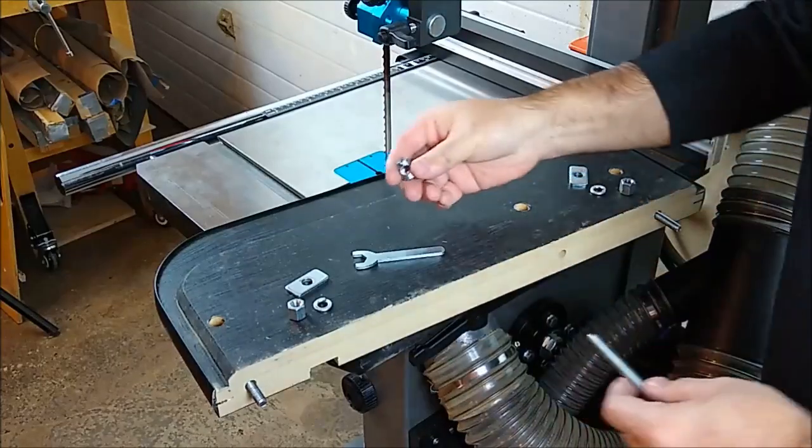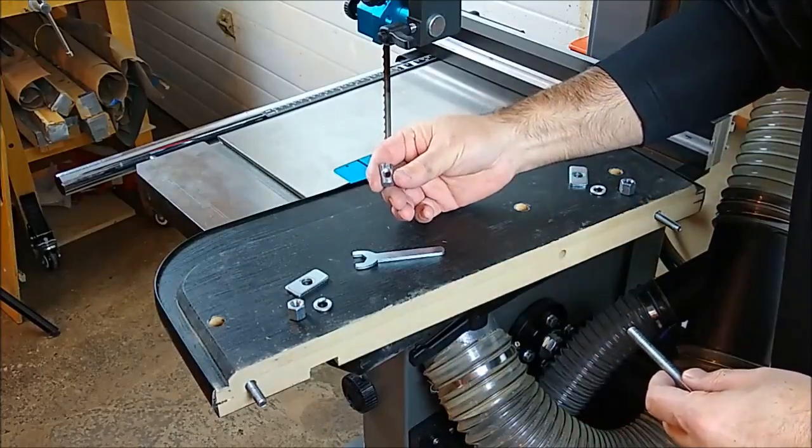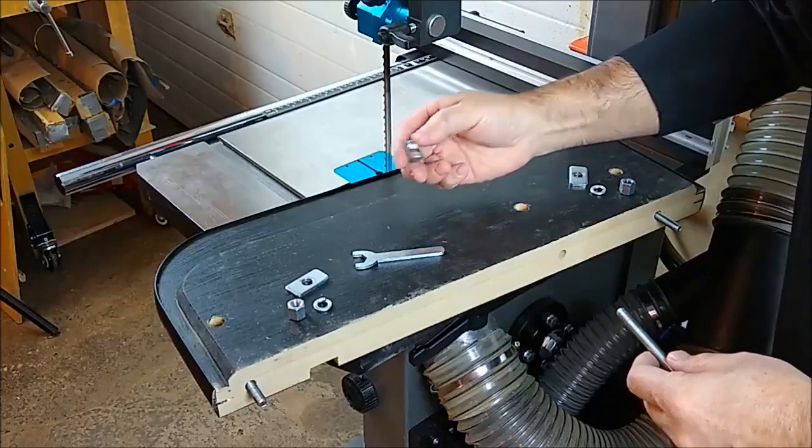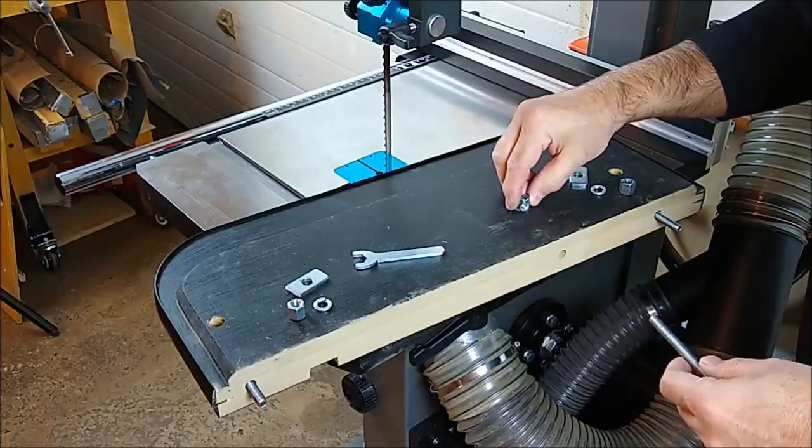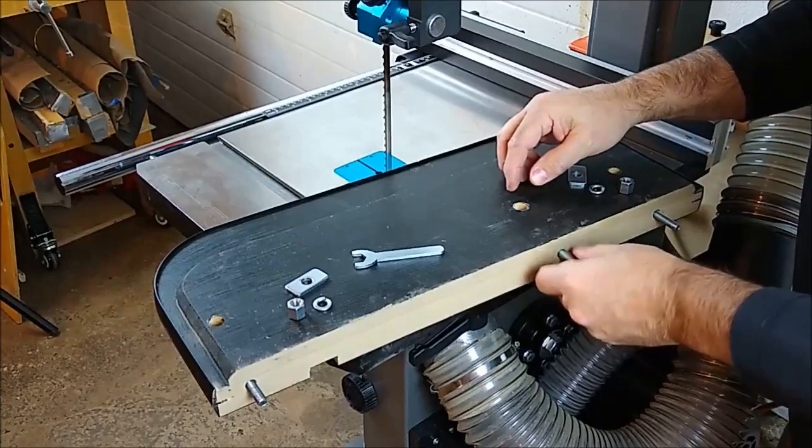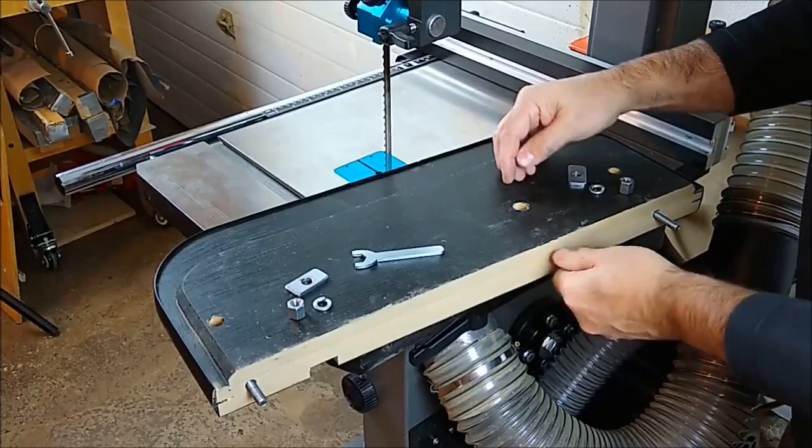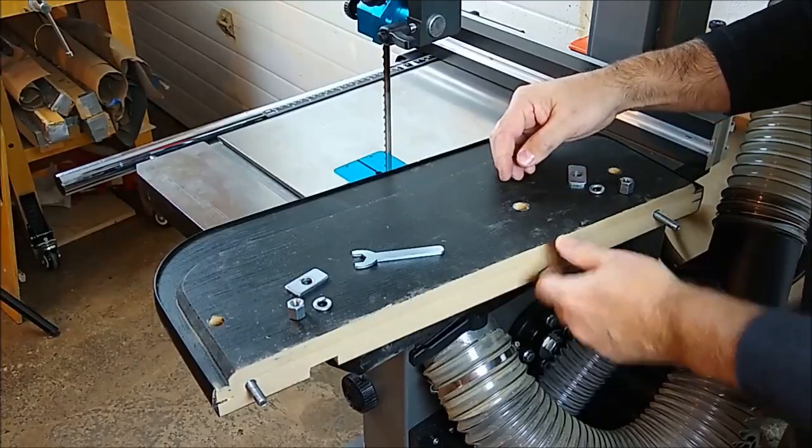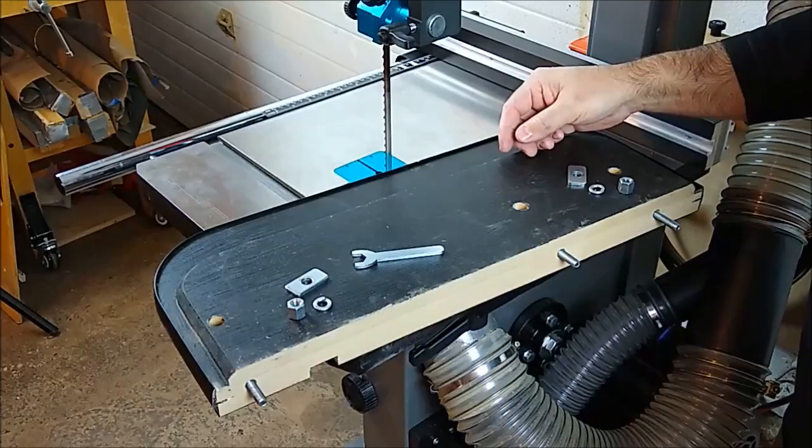The only thing I had to source separately were these barrel nuts. This is going to attach to the other end. Basically just drop the barrel nut in place there and then you can go ahead and insert your threaded rod. Once you have all three of those in, you just flip it over and bolt it to your table.